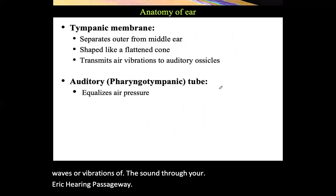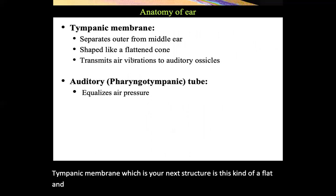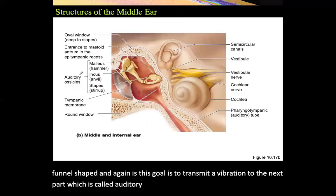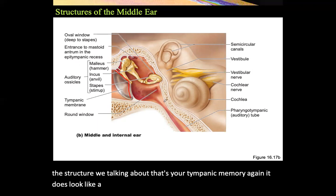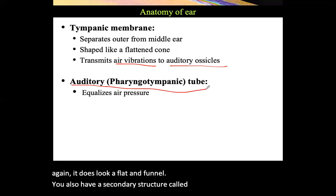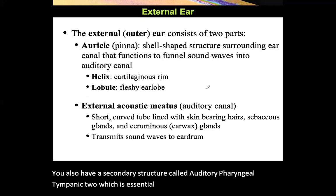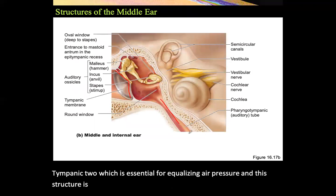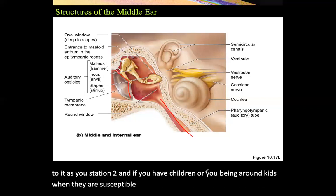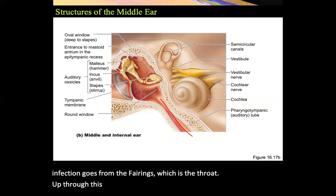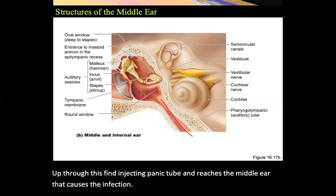The tympanic membrane is a flattened funnel shape, and its goal is to transmit vibrations to the auditory ossicles. There is also a secondary structure called the auditory pharyngotympanic tube, essential for equalizing air pressure — sometimes referred to as the Eustachian tube. When children are susceptible to ear infections, the infection typically travels from the pharynx up through this pharyngotympanic tube and reaches the middle ear.